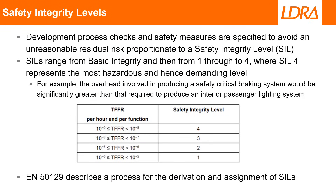Development process checks and safety measures are specified to avoid an unreasonable residual risk proportionate to safety integrity level. SILs range from basic integrity and then from one through to four, where SIL 4 represents the most hazardous and hence demanding level.